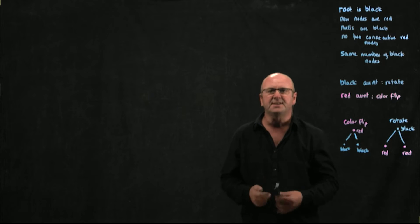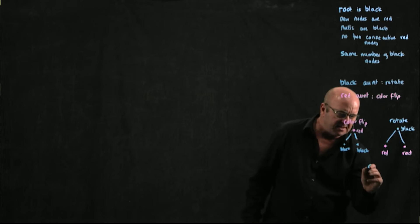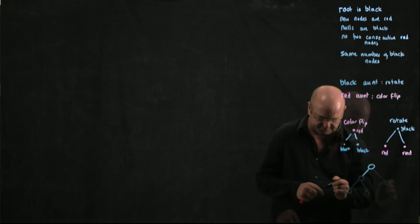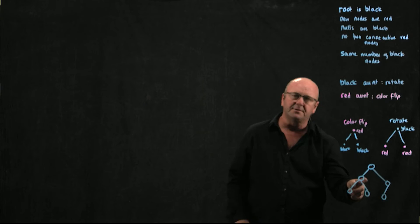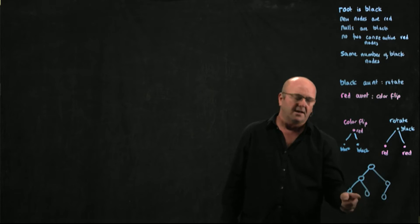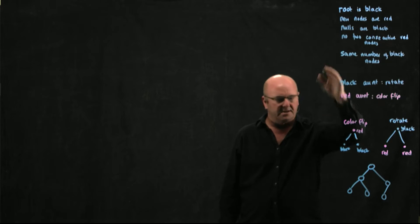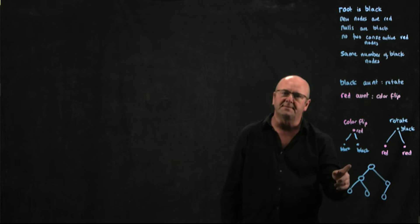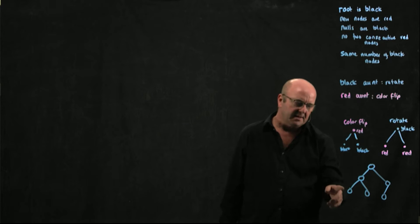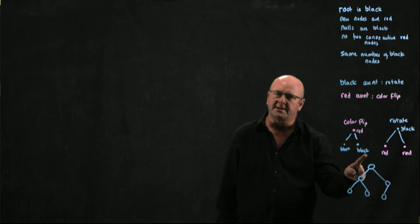The first thing we want to do is check the color at any node and ask: are we violating any of the rules? If we are, then we'll have to fix it. And of course, if a node violates the rules, it's not the node that you manipulate — it's the grandparent.